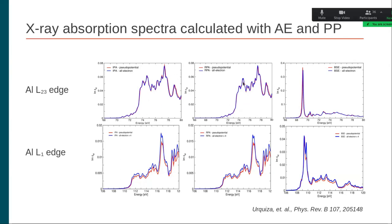The most similar spectra are found for the L2-3 edge in all three approximations: independent particle, RPA, and BSE. For the L1 edge, there are small differences, especially in the absorption intensity, because in all-electron calculations we perform excitations from just one atom. When contrasting with the pseudopotential where you have four degenerate states corresponding to four aluminum atoms that must all be included, multiplying by four does not exactly recover the same intensity. This means there might be some interference effects present in the pseudopotential case that give a reduction in intensity.